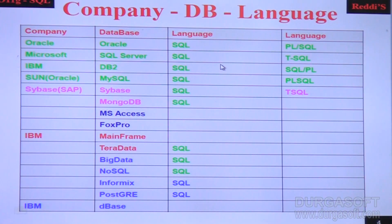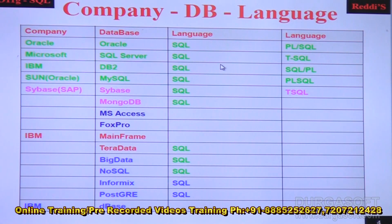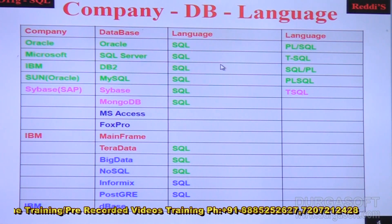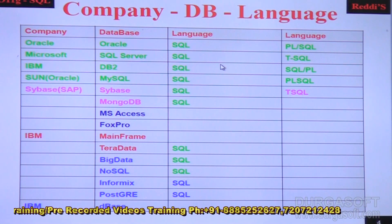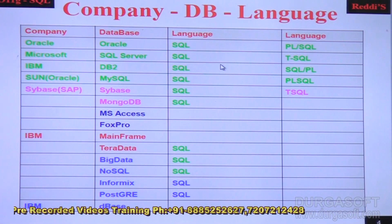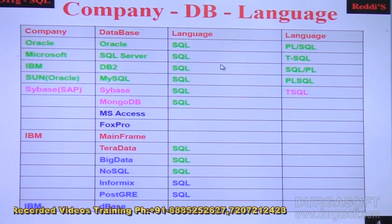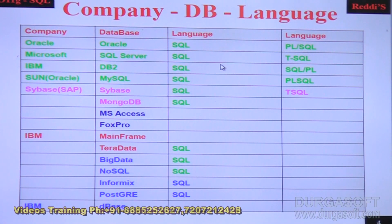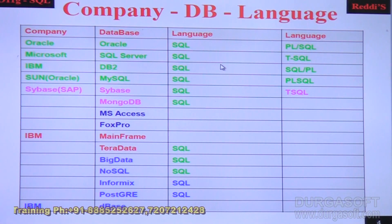Apart from these databases, we have some other databases in the market: MongoDB, MS Access, FoxPro which is an older database, Mainframe, TeraData, and Big Data. In some of these databases we use NoSQL. Also Informix, PostgreSQL, and dBase — these are some of the databases in the market.